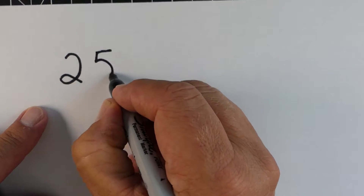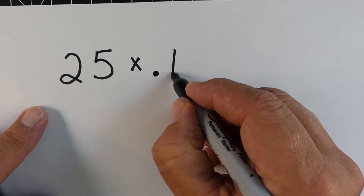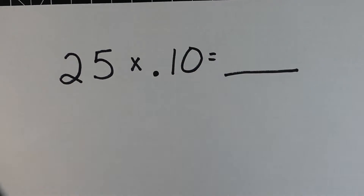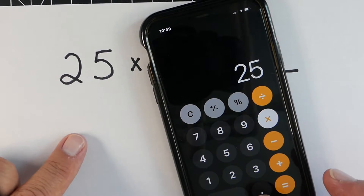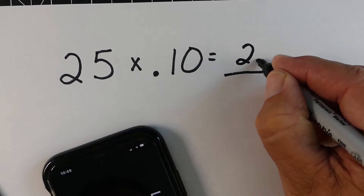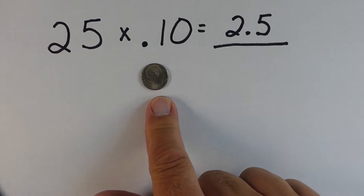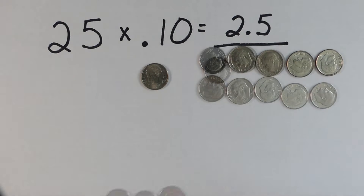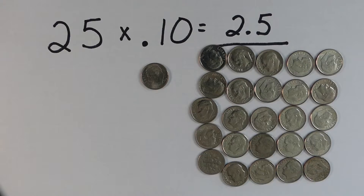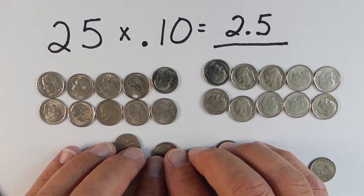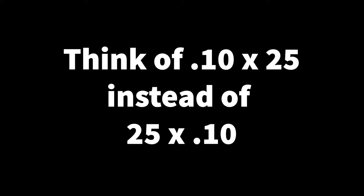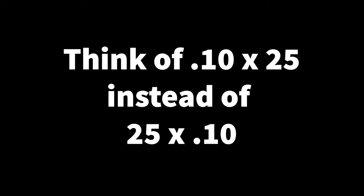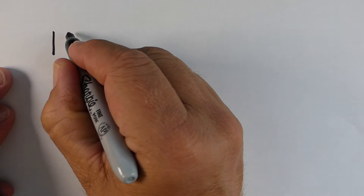This is an example of the commutative property — it allows us to switch the order we multiply. So let's look at 25 times 0.10. We'll go ahead and multiply it again with our calculator just to check our work. If we take 25 and multiply it by 0.10, we get 2.5, which is definitely a lot smaller than 25. If we model with a dime, we would have 25 dimes. Breaking them into dollars: 10 dimes is $1, another 10 dimes is another dollar, and we have 50 cents left over. It makes more sense to think of it as 0.10 times 25.